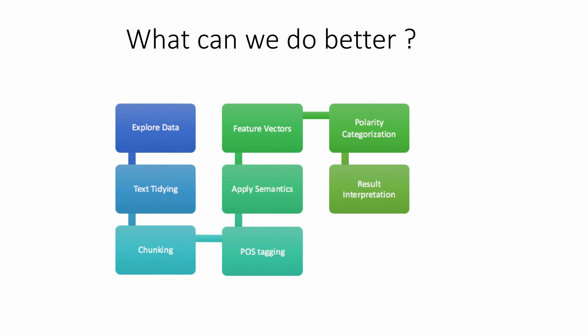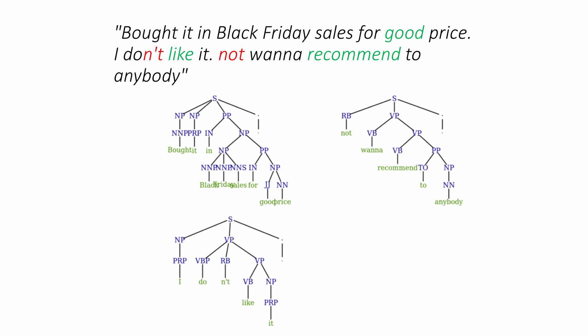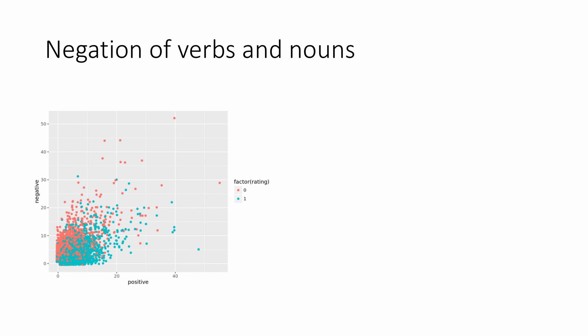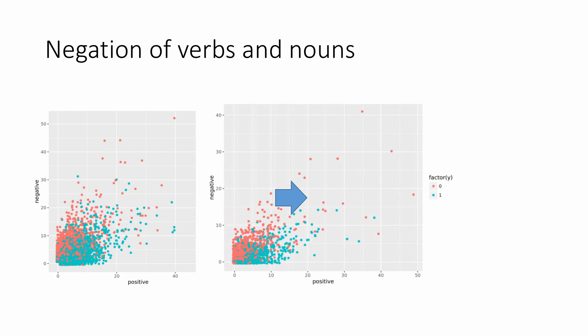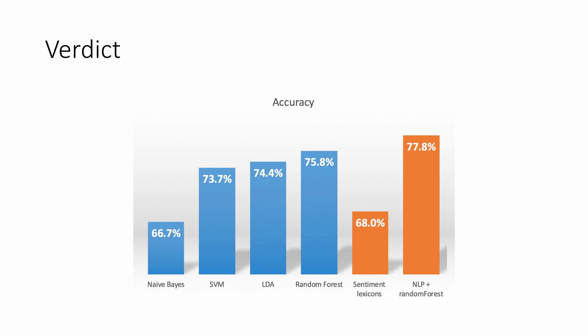We took each review and split it into sentences, then into chunks of semantically related words, then applied negations. For example, this sentence would account for a false positive, but with our algorithm it scores two negatives and one positive. By running this simple polarity inverter on thousands of reviews, we can bring this graph into a better clustering.